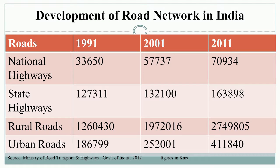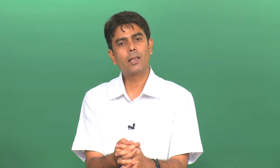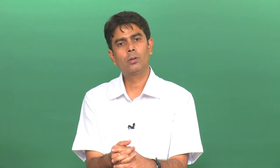Comparing road network development between the initiation of economic reforms in 1991 and 2011, national highways reached 70,934 kilometers and state highways reached 1,63,898 kilometers.